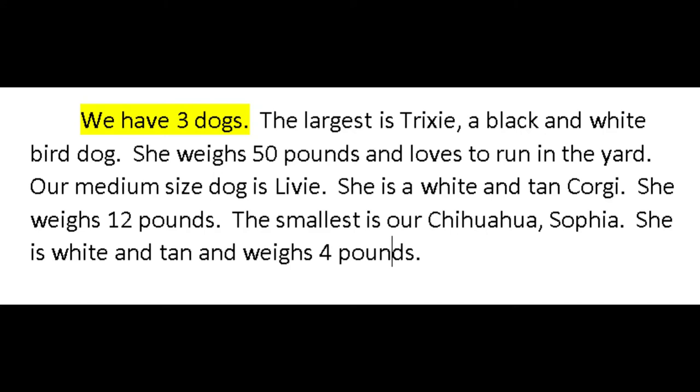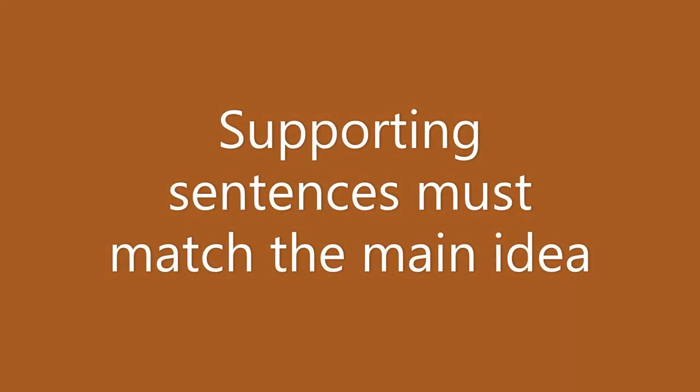Each of these sentences relates back to the main idea we have three dogs. They add to that idea with descriptions, definitions, and examples. An important reminder is that all of the supporting sentences must match the main idea. So I would not want to stop and add sentences to this paragraph about dogs by mentioning my chickens, what kind of chickens I have, or my cat. Those would be their own paragraphs with their own evidence and examples.